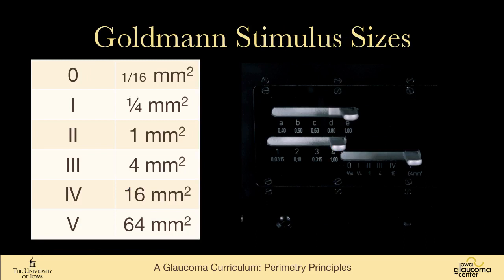This shows the controller on the back of the Goldmann machine where one can choose the size and intensity of the light — it's vastly variable. The thing adjusted most is the size; usually the light is kept maximally bright and just the size is varied. Going from zero to five, every step is multiplied by four. Size two is one square millimeter — multiply each by four to figure out the others. We usually use sizes one, three, and five at our institution.